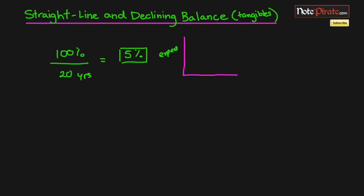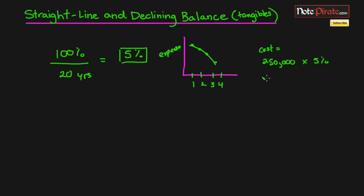With the declining balance method, as the name hints, you get a declining amount of depreciation expense each year — higher at the beginning, lower at the end. One important thing to note: you do NOT subtract the salvage value when calculating your depreciation expense each period. Don't subtract that $50,000. I'll show you how the salvage value comes into play a bit later.